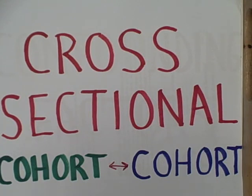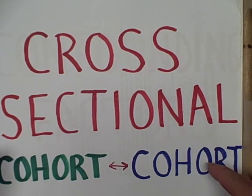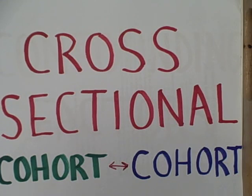The basic logic of cross-sectional research is a separate groups design. Your sample will include people from at least two different cohorts and then we compare these different cohorts — surveying people of different ages, young and old, at the same time and then comparing the two.